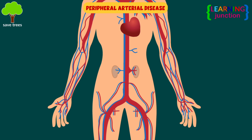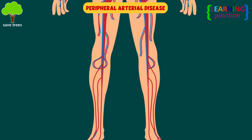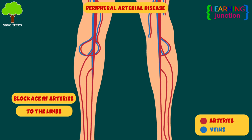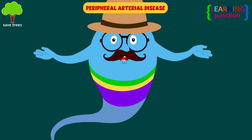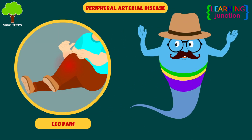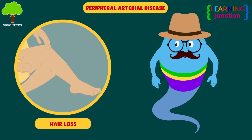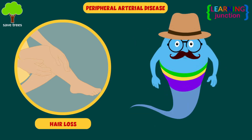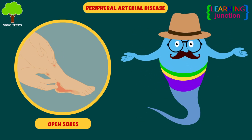Peripheral arterial disease occurs when there's a blockage in the arteries to the limbs, generally the legs. This can cause dull or cramping leg pain, hair loss on the legs and feet, and open sores on the feet and legs.